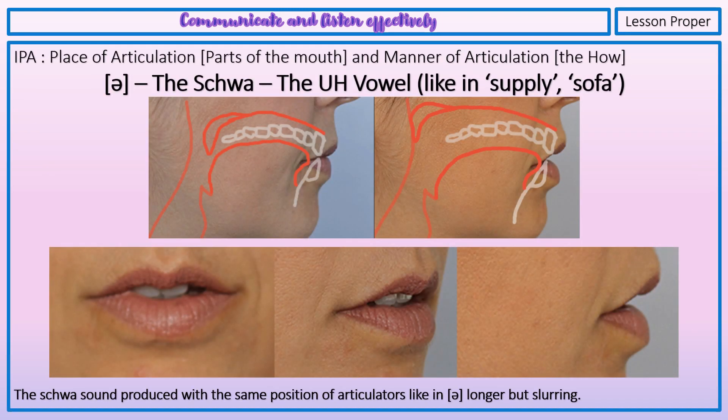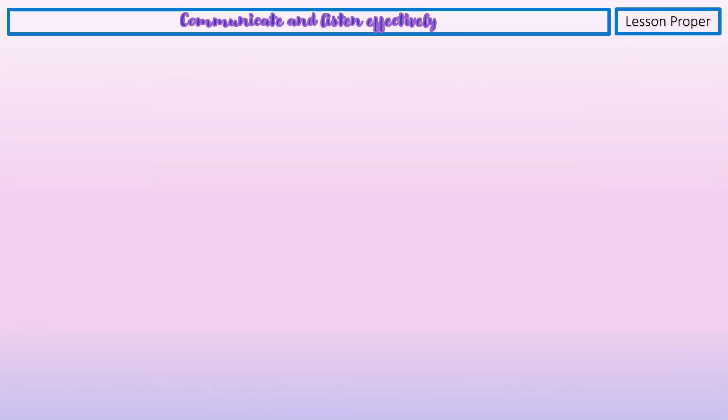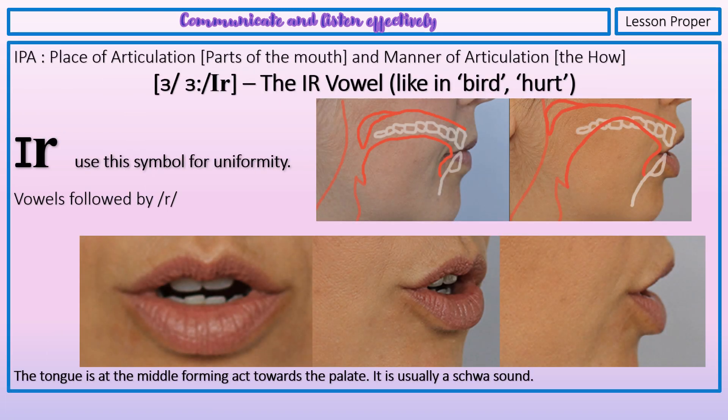Uh — the schwa. This sound occurs in the words sofa, about. Er. This sound occurs in the words burn, journey, worth.